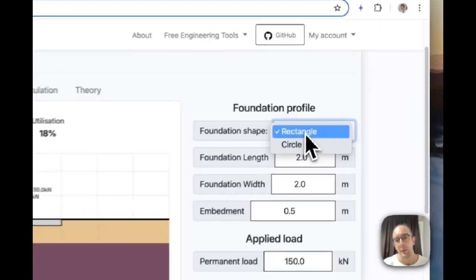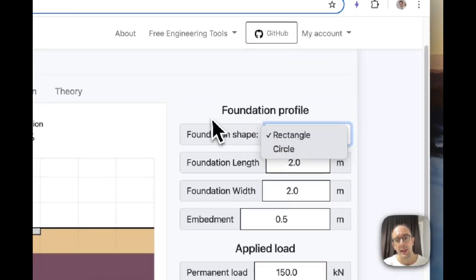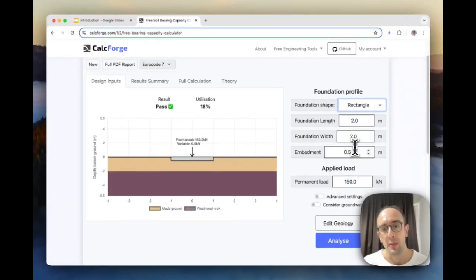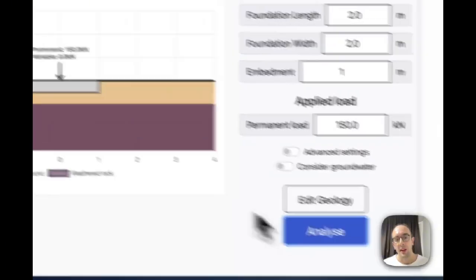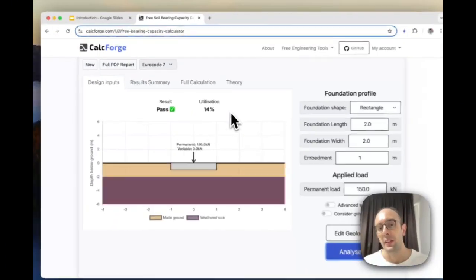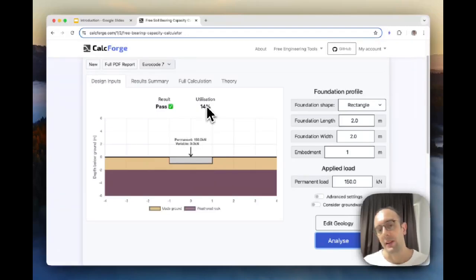So on the right you can change your foundation type, so it can be circular or rectangular. I'll just leave it as rectangular for now and you can change the length and the width and the depth. So let's say I want this to actually be one meter depth, I can change this to one, click analyze, and we'll update our calculation again. It will update the utilization and tell you if the results pass or not.